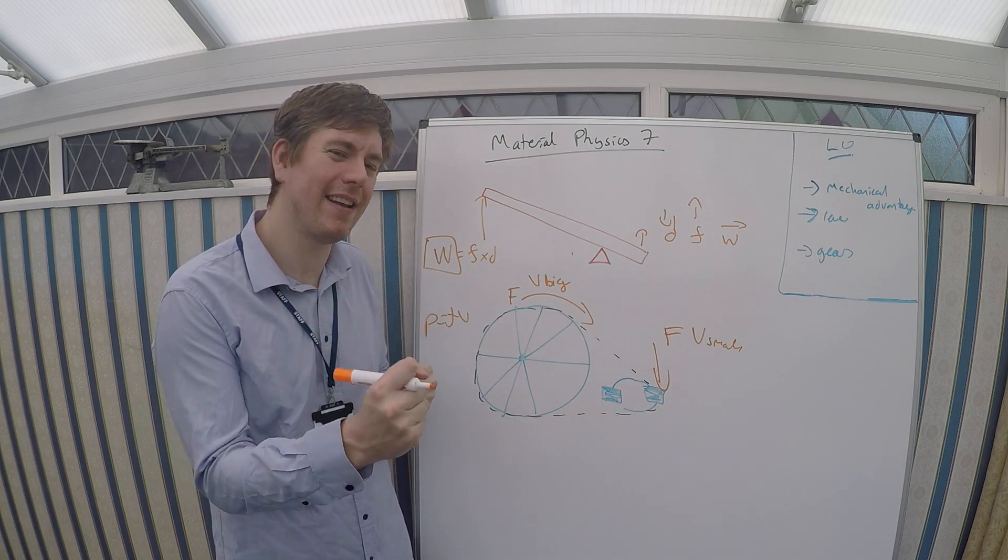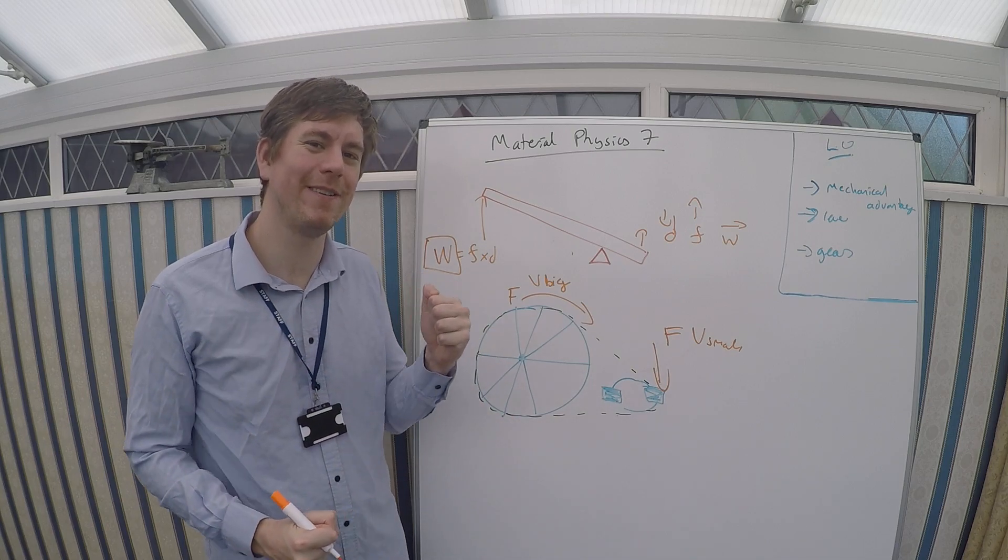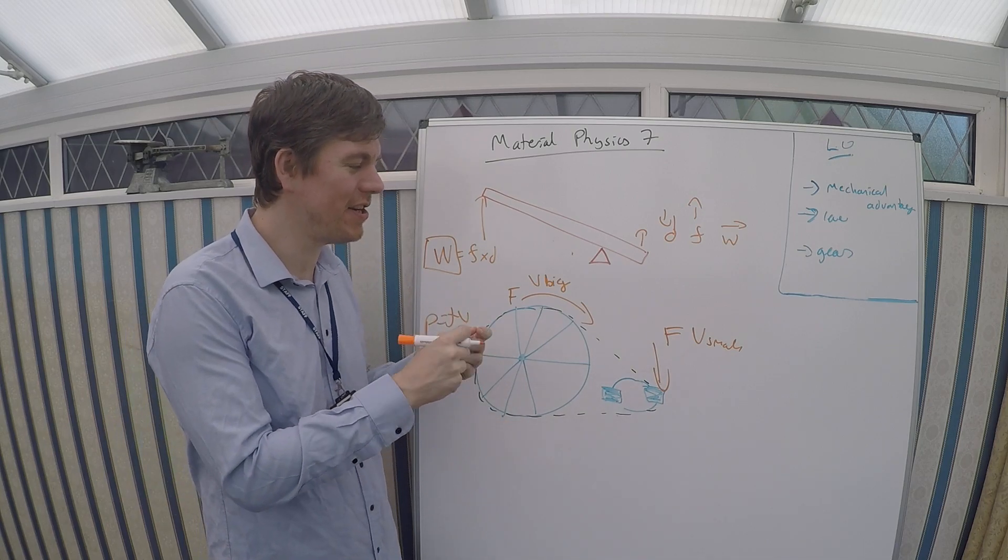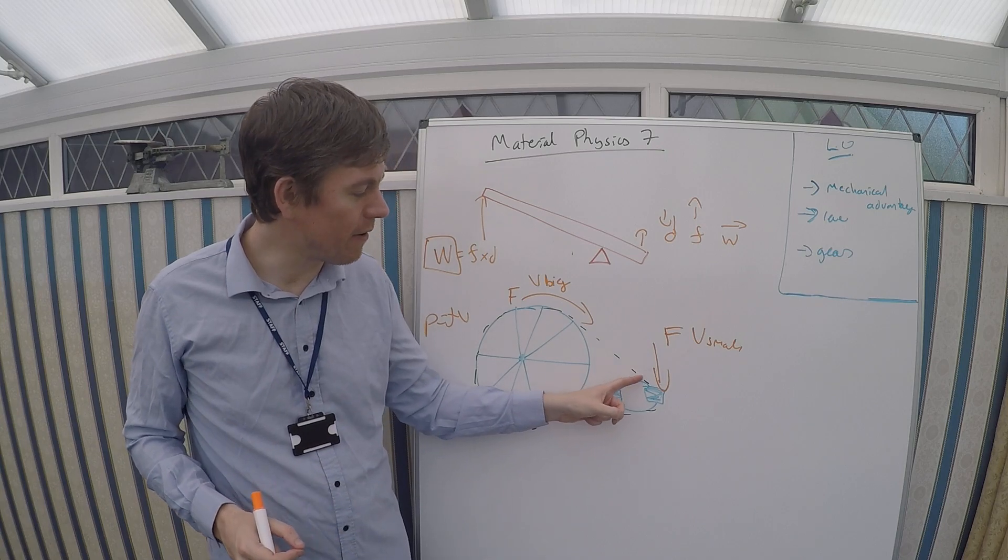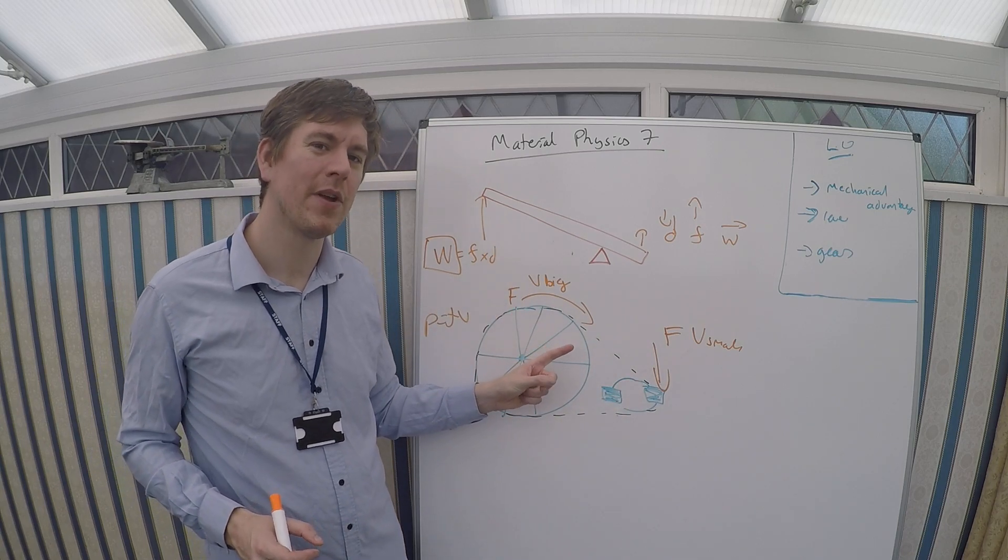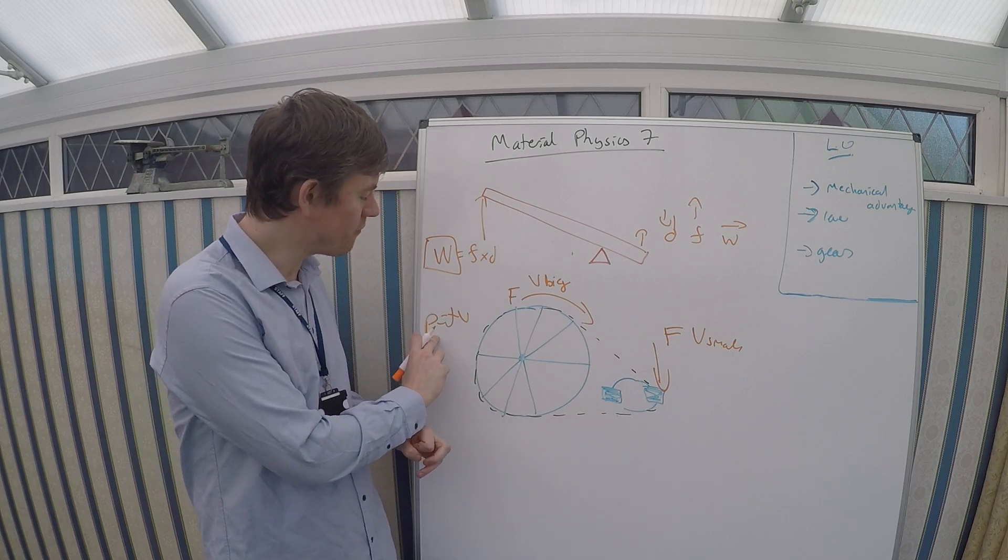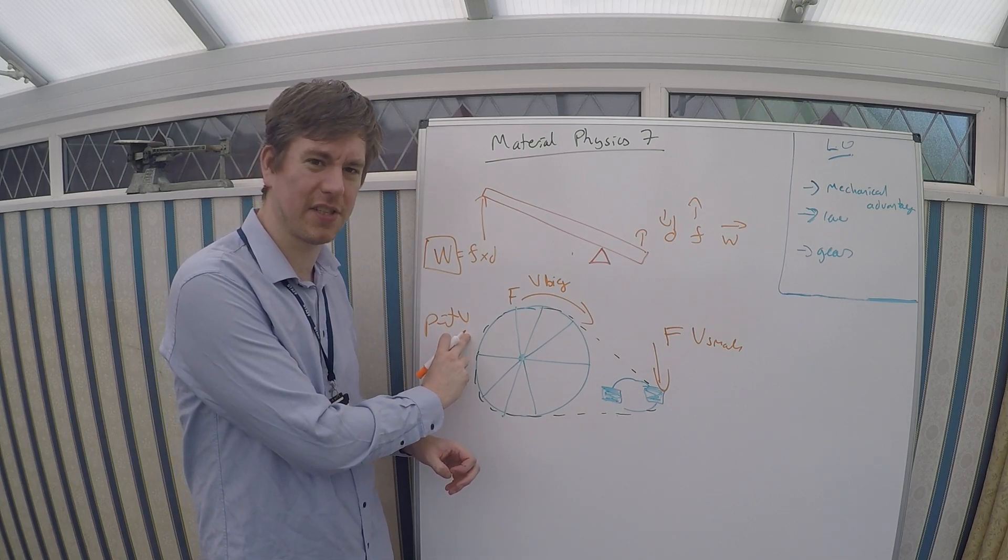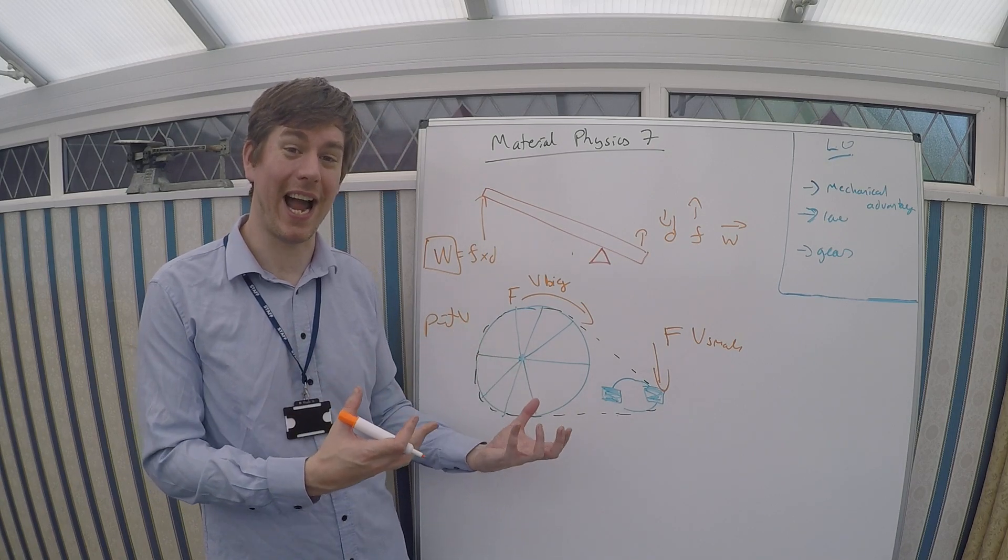But what we want is for you to be pedalling at roughly the same speed regardless. But just by changing the gear ratios, and by going from a small wheel to a big wheel, we can change the ratio of the force and the velocity. And therefore, a bicycle actually works.